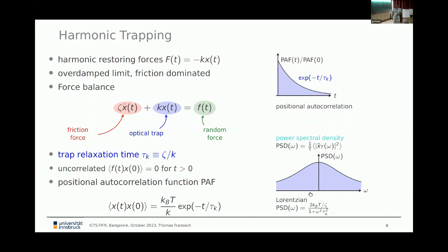Harmonic trapping is a nice example to learn more about stochastic differential equations. To a good approximation we have a harmonic restoring force proportional to the displacement — this is the spring constant. Ignoring the mass in the overdamped limit where friction dominates, the force balance has the friction force, the optical trap term, and the random force. You can read off a characteristic timescale — the trap relaxation time. You can then calculate the positional autocorrelation function, which decays as a relaxing exponential on this trap relaxation timescale. The Fourier transform gives a Lorentzian shape for the power spectral density.